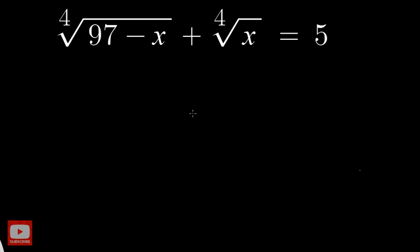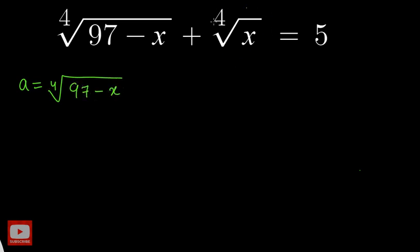So the method that we are going to use for removing the radical symbols will be the substitution method. I am going to substitute the first term as a. So let a be equal to 4th root of 97 minus x. And I am going to substitute the second term as b. So let b be equal to 4th root of x.